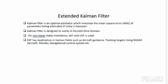The Extended Kalman Filter is the best and recursive filter for nonlinear target estimation. Noise is added to our measurement data and disturbs them. For accurate estimation, these data need to be passed through the filter to get accurate target position and path. The Kalman filter is an optimal estimator which minimizes the mean square error of the parameter being estimated when noise is Gaussian. The Kalman filter is designed to work in the discrete time domain.